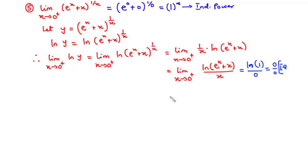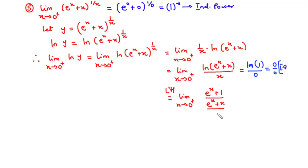Applying L'Hôpital's rule, we differentiate both the numerator and the denominator. The derivative of ln(eˣ + x) gives (eˣ + 1) divided by (eˣ + x), and the derivative of x is 1. Anything divided by 1 is the same thing, so we can simplify — this is the result of applying L'Hôpital's rule.